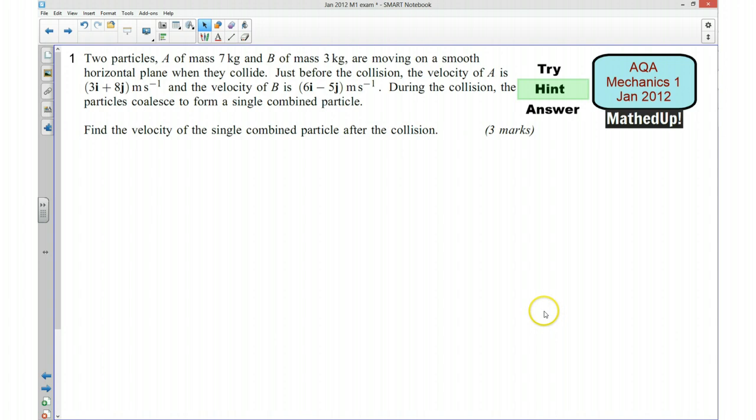Okay, well done if you managed to have a go at that. I'm now going to give you a hint as to how you can go about answering the question. So we've got two particles A of mass 7 kg and B of mass 3 kg and they're moving along a smooth horizontal plane when they collide.